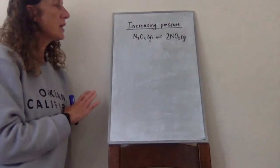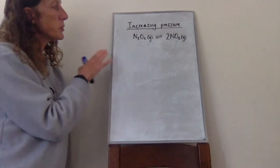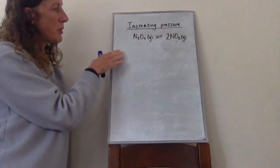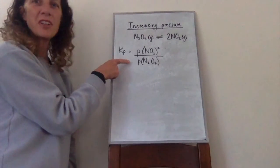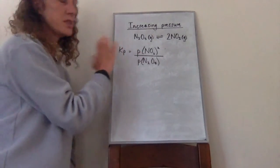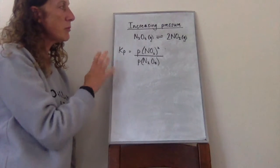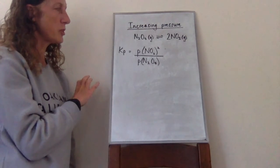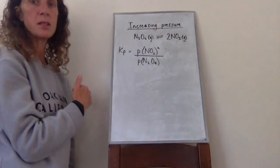We're going to start by looking at how pressure affects the equilibrium position, and the first thing we'll do is put together the Kp expression for this reaction. Remember the curly brackets — not square brackets, because square brackets show concentration. We can recall from AS and GCSE that increasing pressure favours the side of least moles.